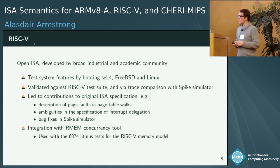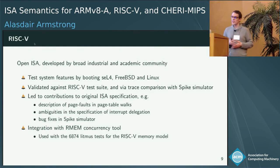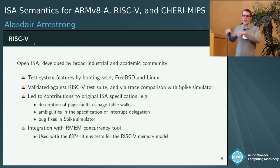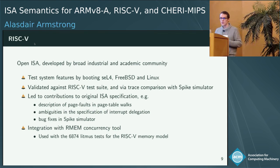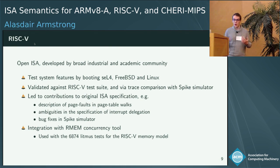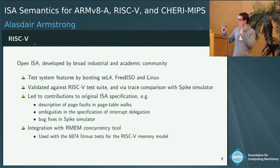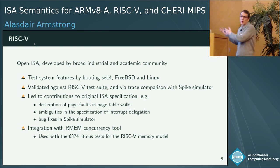We also have a RISC-V model, validated in much the same way. On the RISC-V model, we can boot seL4, FreeBSD, and Linux. We validated it using the RISC-V test suite and by comparison with the Spike simulator, developed by the RISC-V people. Some of the people in our long author list are involved in the RISC-V process and working groups, so we've contributed back into RISC-V development. Developing a formal specification shed light on parts of the spec that weren't fully described — there were ambiguities in interrupt specifications, page table walks, and we found bugs in the Spike simulator. We've also integrated the RISC-V model into the RMM concurrency tool, and our SAIL model has the expected behaviour on about 6,847 litmus tests.